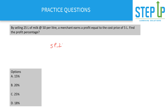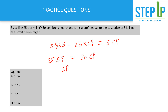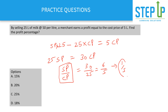From 25·SP − 25·CP = 5·CP, we get 25·SP = 30·CP, so SP/CP = 30/25 = 6/5. Profit percentage = 1/5 = 20%. This is again a 10-second question. We are extensively using the SP/CP ratio to attempt these questions in 10 to 15 seconds.